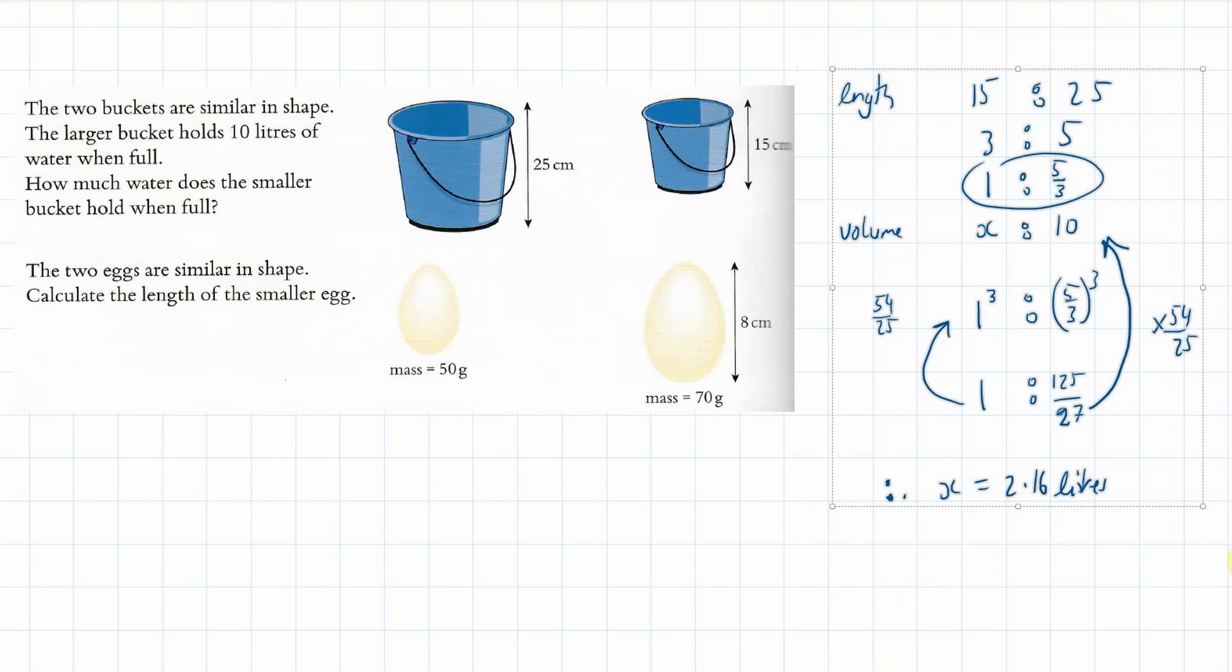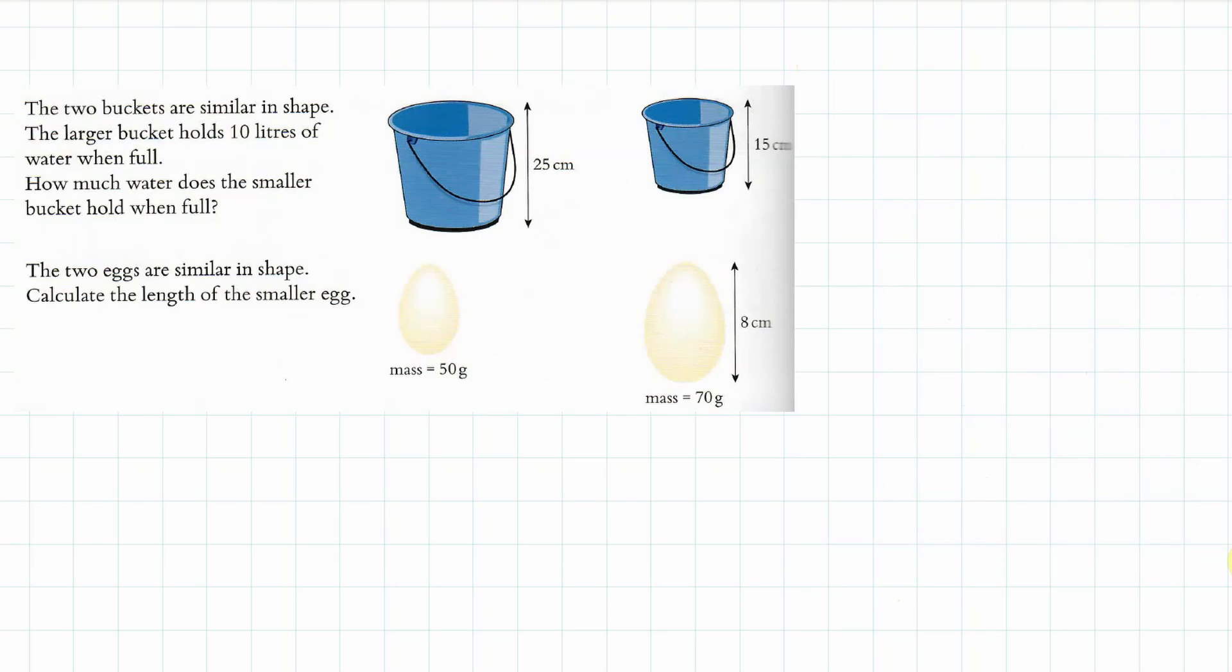Now, I'll delete that. And now we're going to talk about the egg. We know the lengths. We only know one of the lengths. So, we've got x of the small to 8 of the big. And then the volumes are such that we have 50, because mass is to do with the volume. So, we're going to go 50 to 70 here. And that's like 5 to 7. And I'm going to divide both sides by 5. So, I get 1 to 7 over 5. And I could write that as 1 cubed to cube root of 7 over 5 cubed. That's the ratio.